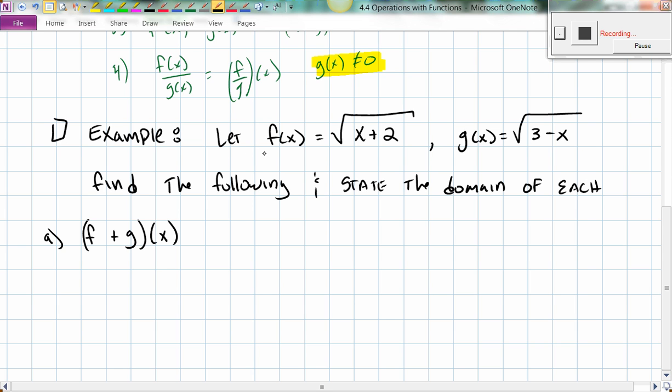So we're going to let f of x be the square root of x plus 2. So that's a shark fin that's been moved two units to the left. And then we have g of x equals the square root of 3 minus x. So we have a replacement of x with a negative x and then a 3 over. So that makes an interesting graph. You plug it in your calculator and see what you get. We're going to find the following and state the domain of each. I'm going to do four of these for you. I'm going to do f plus g of x.